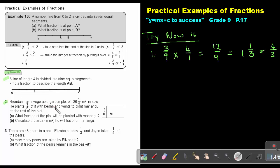Brendan has a vegetable garden plot of 26 and a quarter meter square in size. He plants one-fifth with beans and wants to plant Mohangu on the rest of the plot. What fraction of the plot will be planted with Mohangu? Calculate the area you have for Mohangu. Okay,